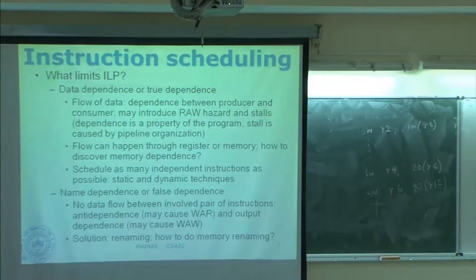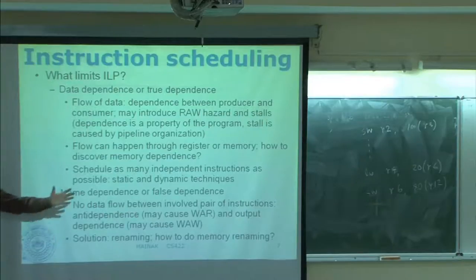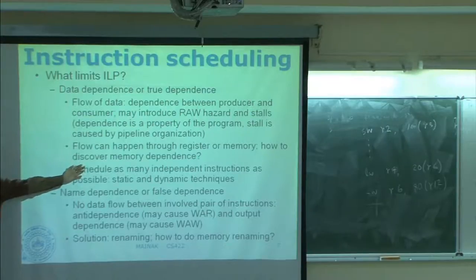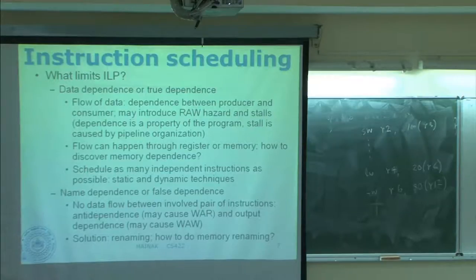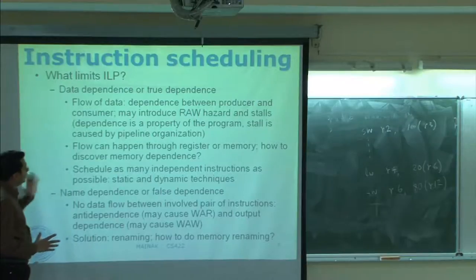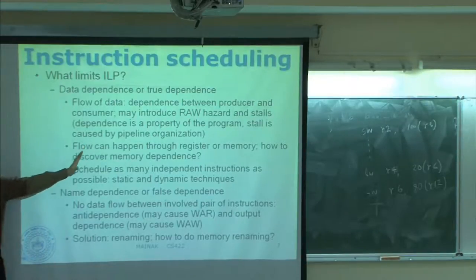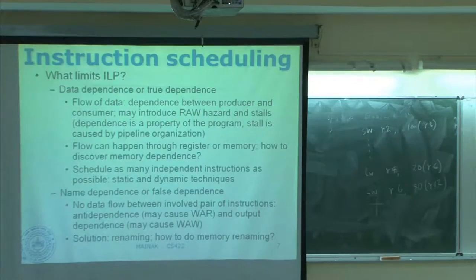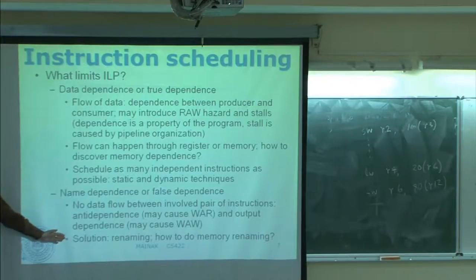Assuming you have an oracle to decide control dependence and unlimited registers to get rid of all name dependence, then the ultimate limiter is going to be true data dependence only. Everything else will go away. The goal of a processor designer is to remove everything except true dependence: design a good branch predictor and good mechanisms to do renaming. Branch prediction has already been talked about.